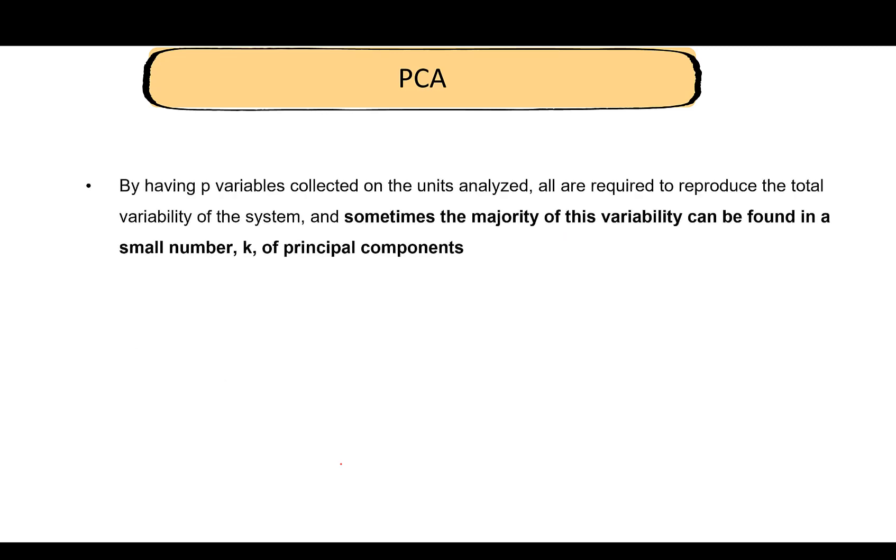How do we get the dimension reduction? We still have those p principal components. In general, if our data has p variables, we typically need p principal components, or all the principal components, to reproduce the total variability of the system. However, sometimes it's possible that majority of the variability can be found in a smaller number of components.